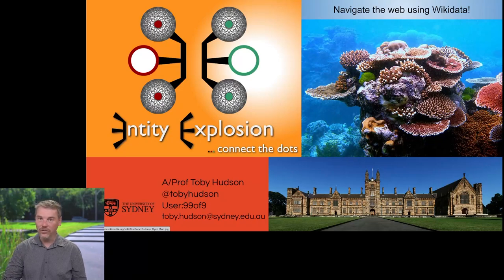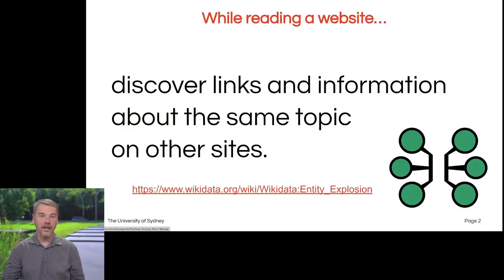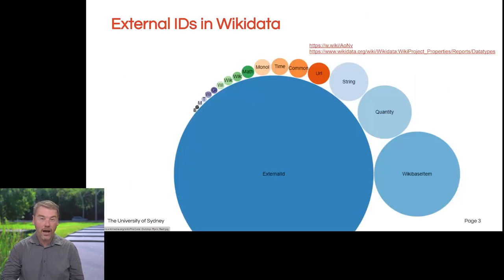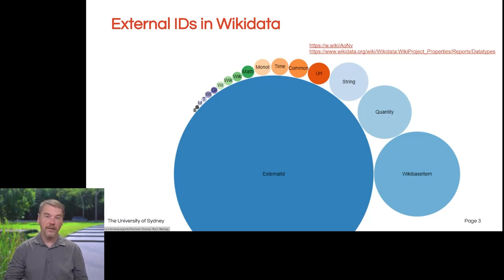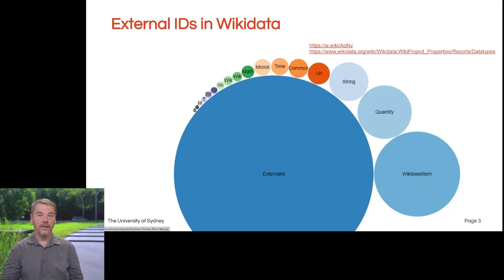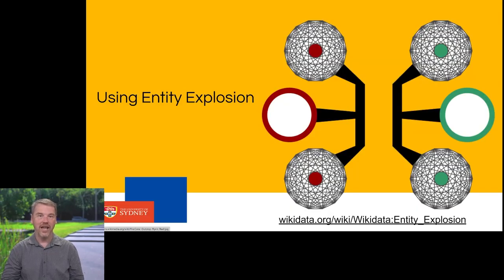What does it do? While reading a website, it lets you discover links and information about the same topic on other sites with a single click. Roughly 90% of properties in Wikidata are identifiers. They do very little inside the database, but their value is to connect to external sites and connect them to one another. In this way, we're the backbone, the central hub of the internet, and Entity Explosion is the way to navigate this.